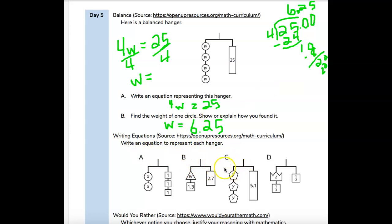Write an equation to represent each hanger. So here you're going to have 2x equals three. That'll be a decimal also. 1.3w equals 2.7. 3y equals 5.1. I'm sorry. That's not a 2. 1 third z equals 1 half. So do your best with those. And we'll move on.